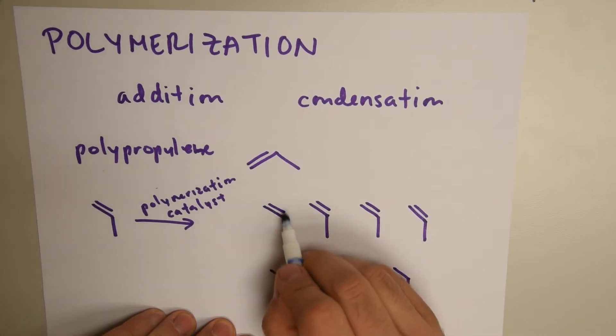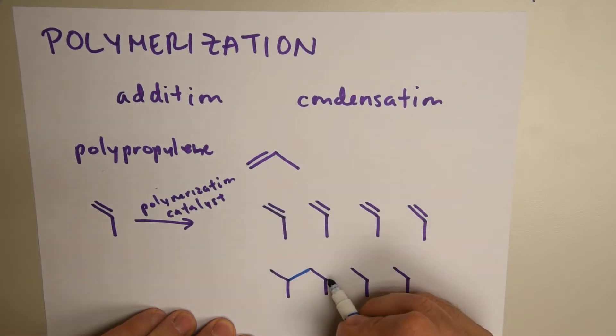So, this little arm that was bent, that was broken from the double bond breaking, joins with the next little arm over. And we continue on.